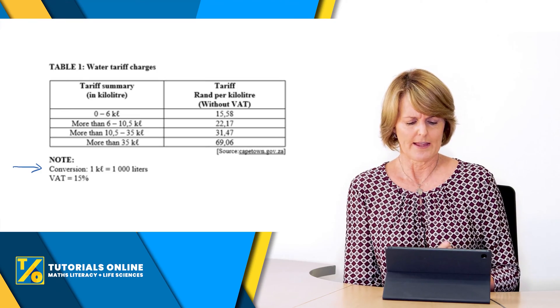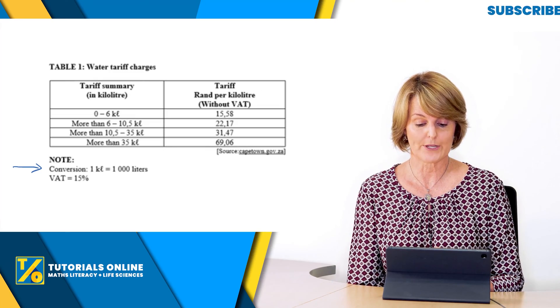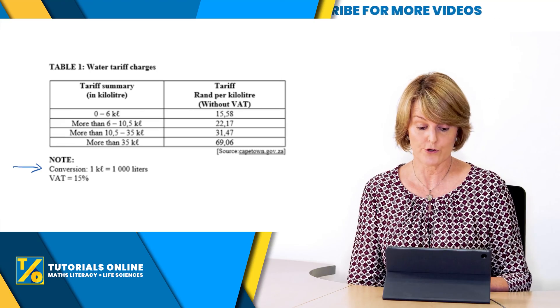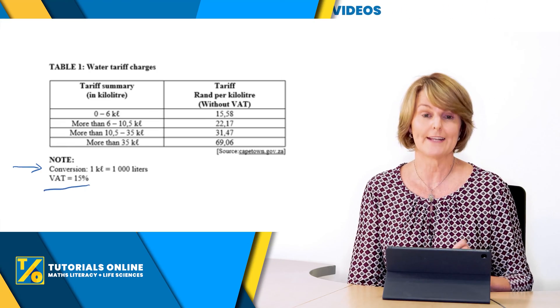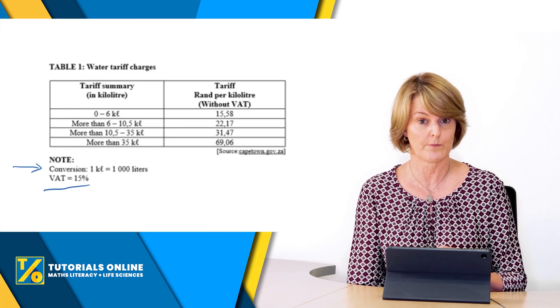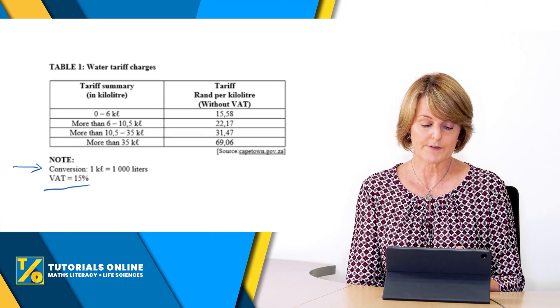On the right hand side it says tariff in rand per kilolitre without VAT. Now what is that? You should know that but they give it to you as well, it says 15 percent, so you're going to be using that at some stage if this was related to a question.